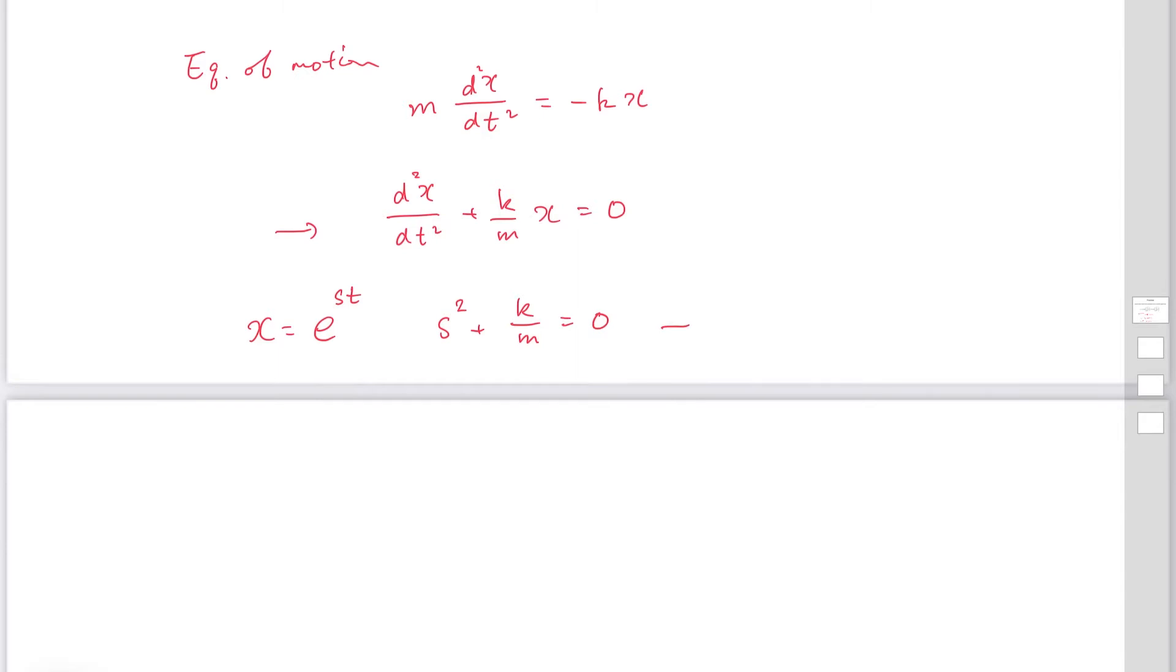From this equation, s becomes plus minus square root k over m i, imaginary numbers.